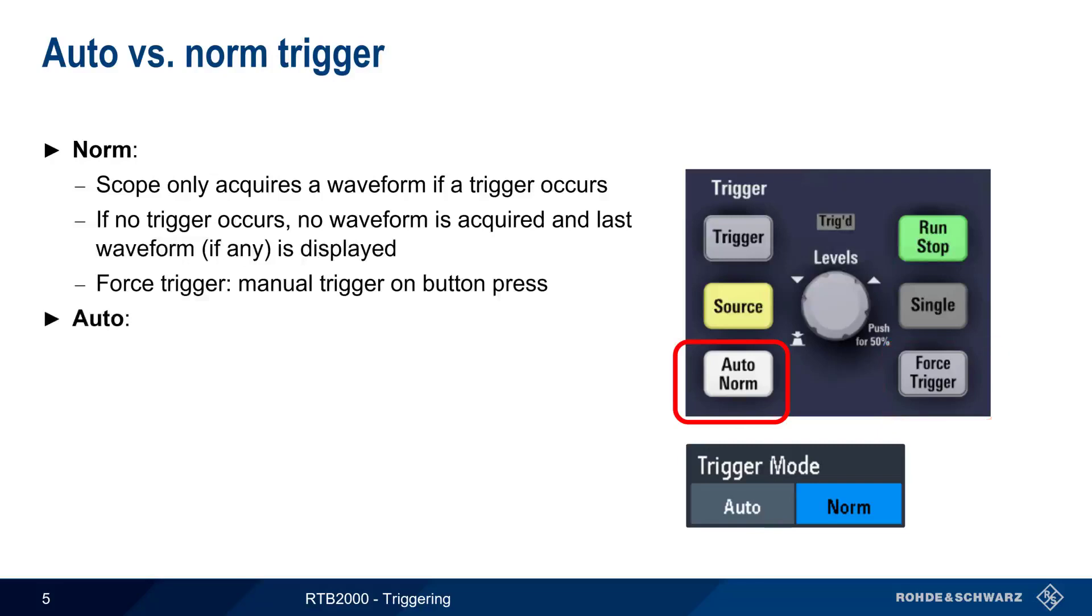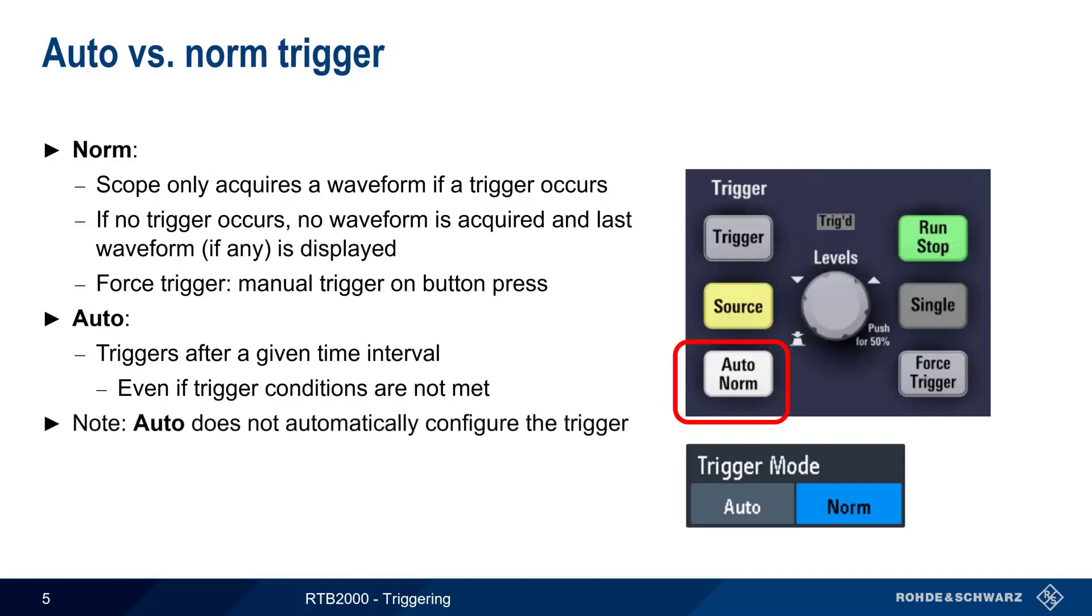On the other hand, Auto triggers the scope not just on a valid trigger event, but also automatically after a given time interval has elapsed, even if there is no valid trigger. This ensures that the screen is never blank or static, even if the trigger has not yet been properly configured. Please note that Auto doesn't automatically configure the trigger type, level, etc. It only specifies the conditions required for triggering. If you are looking for a way to automatically configure a trigger, the Auto Set button will try to configure an edge trigger automatically using the current waveform.